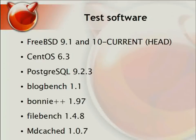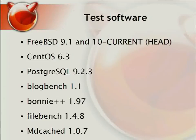Some notes about software versions: I did both FreeBSD 9.1, which is the release version, and FreeBSD 10-CURRENT, which is the future version 10, snapped approximately two weeks ago. Debugging was turned off — no WITNESS, no invariants. For comparison with Linux, I used CentOS 6.3, probably the most used enterprise version of Linux. Benchmarks used were PostgreSQL 9.2, Blockbench, Bonnie++, FileBench, and my own bullet cache server, which I'll describe later.